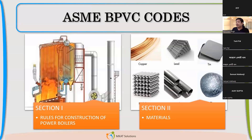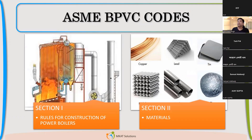Now whether those defects are acceptable or not is where the design code comes into picture — they mention the acceptance criteria. For example, if you have a linear defect, what is the permissible length? If there is a cluster of porosity, what size is permitted? If the code is very stringent, like Section 3, it may accept only very thin defects — say 0.1 to 0.2 mm, whereas Section 8 Division 1 may accept 1 mm. Please note those values are just examples, not actual code values.